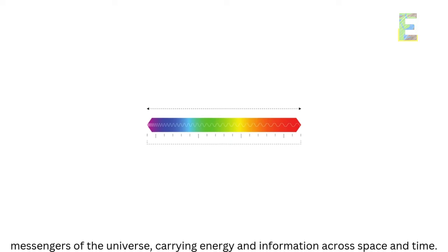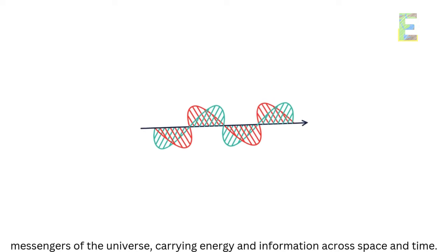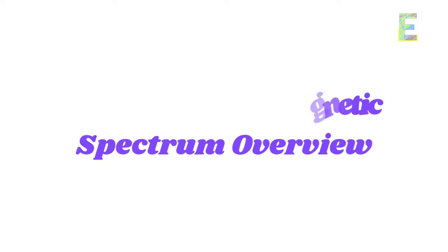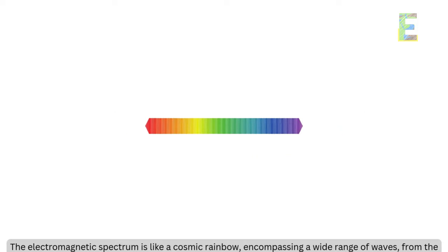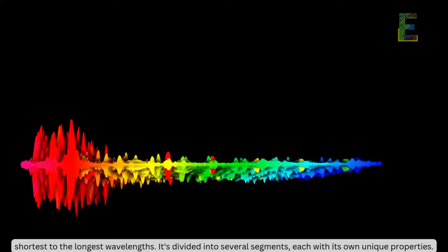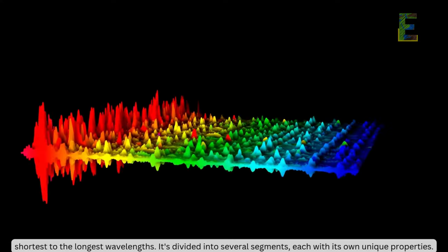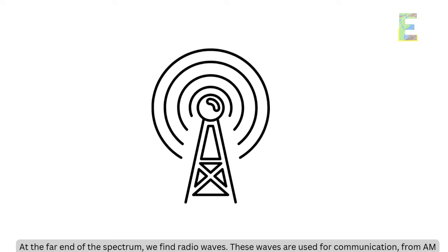These waves are the invisible messengers of the universe, carrying energy and information across space and time. The electromagnetic spectrum is like a cosmic rainbow, encompassing a wide range of waves from the shortest to the longest wavelengths. It's divided into several segments, each with its own unique properties.